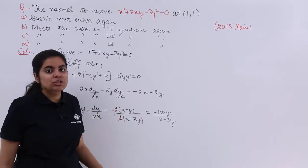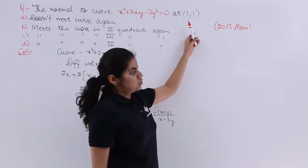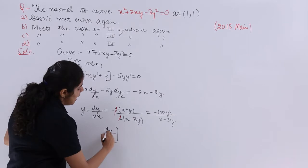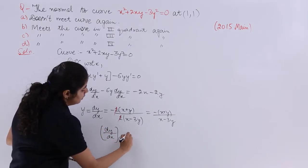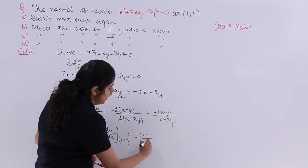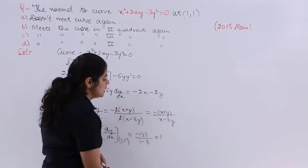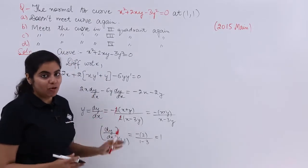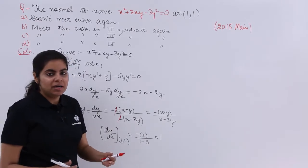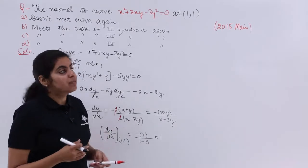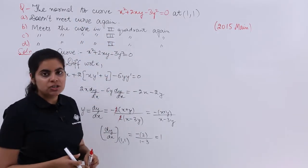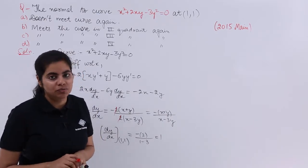Now that we have dy/dx, let's evaluate it at the point (1, 1). The value is (−1 + 1) / (1 − 3) = 0 / (−2)... wait — it's (−1 + 1) / (1 − 3) = −2 / −2 = +1. So the slope of the tangent is +1. The question asks about the normal, so let's directly find the equation of the normal.